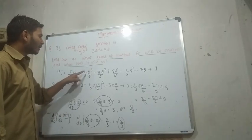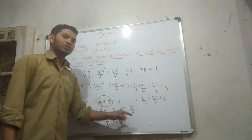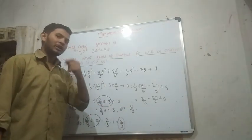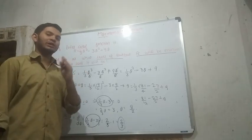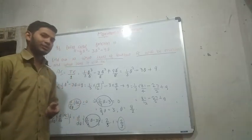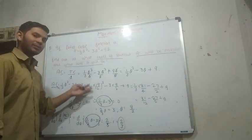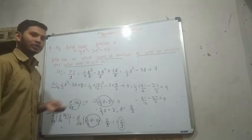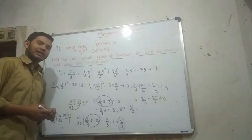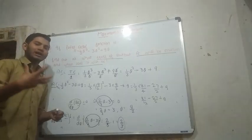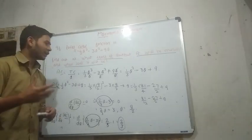Setting the derivative to zero and solving gives us Q equals 9/2. So at Q = 9/2, the average cost is at its minimum. This is the last question which we covered in the last video — if you have seen that video, you will recognise this.